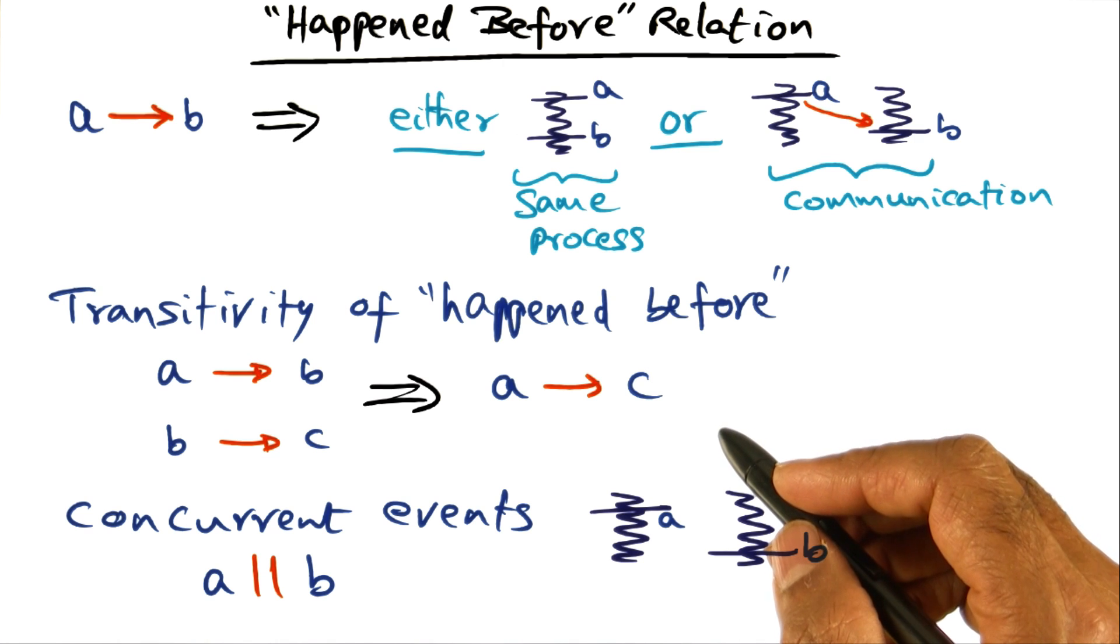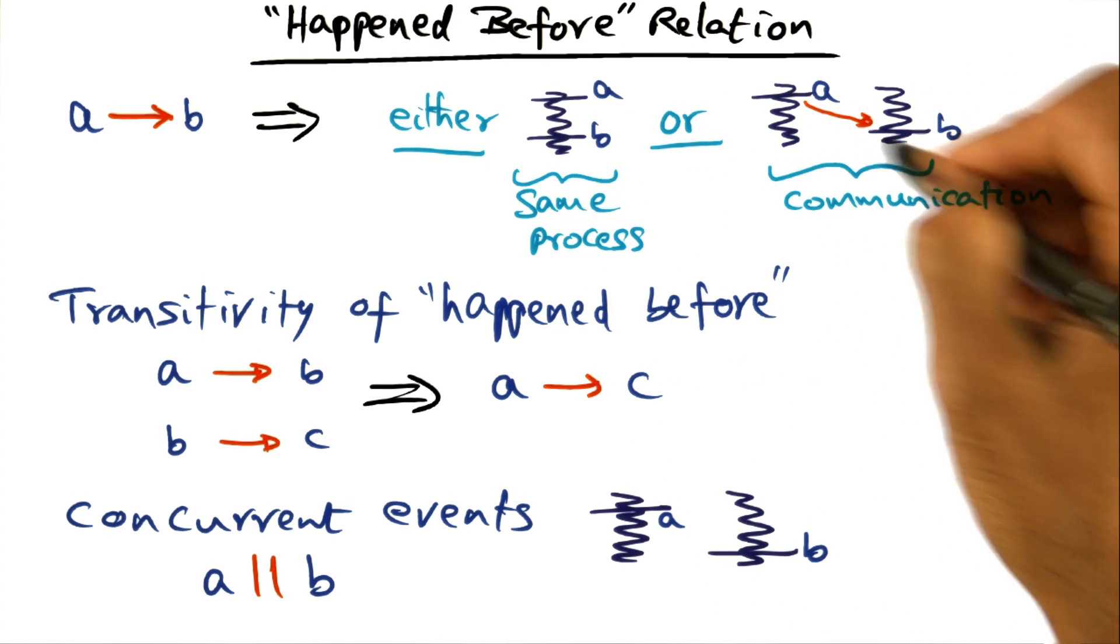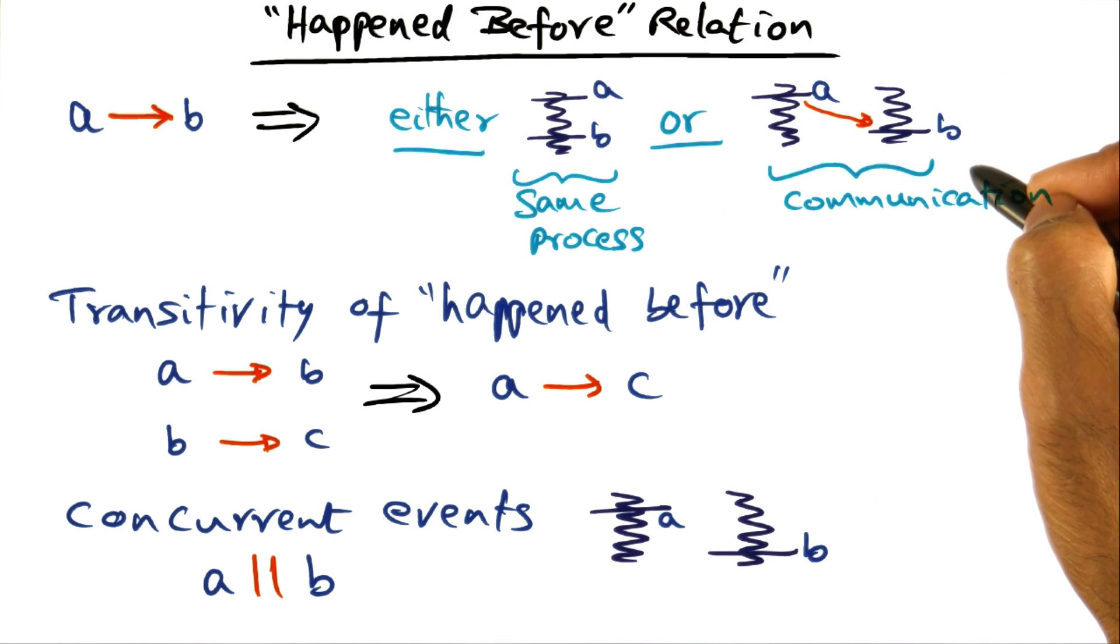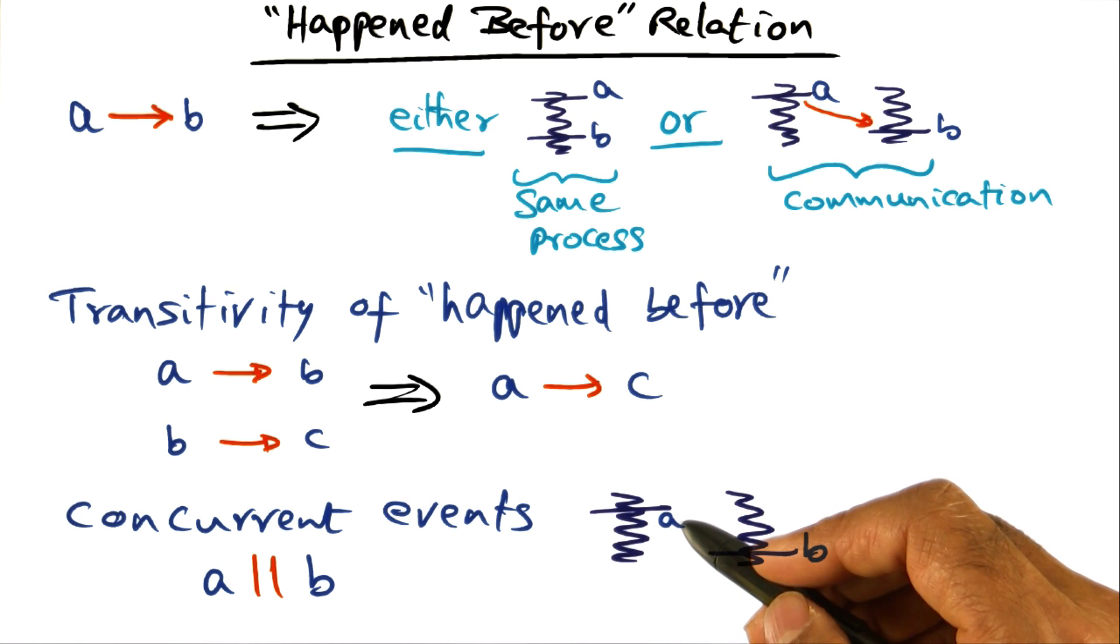So there is no way for us to derive a total order by looking at the events that are happening on the same process or just looking at the events that are happening on the different processes in the distributed system. And this is a very good example why it's impossible to get a total order for all the events that are happening in the distributed system, because there are events that are going to be concurrent.